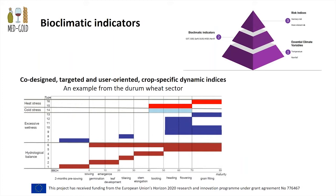In Medgold, we have followed this hybrid approach by combining indices and impact models. In the agricultural sector, specifically in the durum wheat sector, we have used climate indices together with a phenological model that simulates the development of durum wheat in different locations. These 16 indices characterize different aspects of the growing season that might have negative impacts on crop yield and quality, resulting in losses. These include heat stress, cold stress, excessive wetness, and hydrological balance, covering different periods linked to the simulated phenological phases.